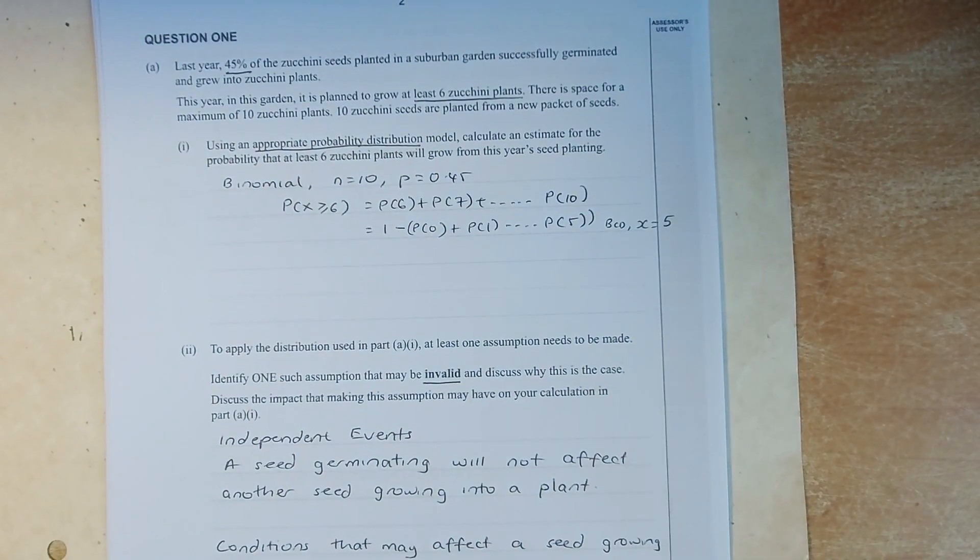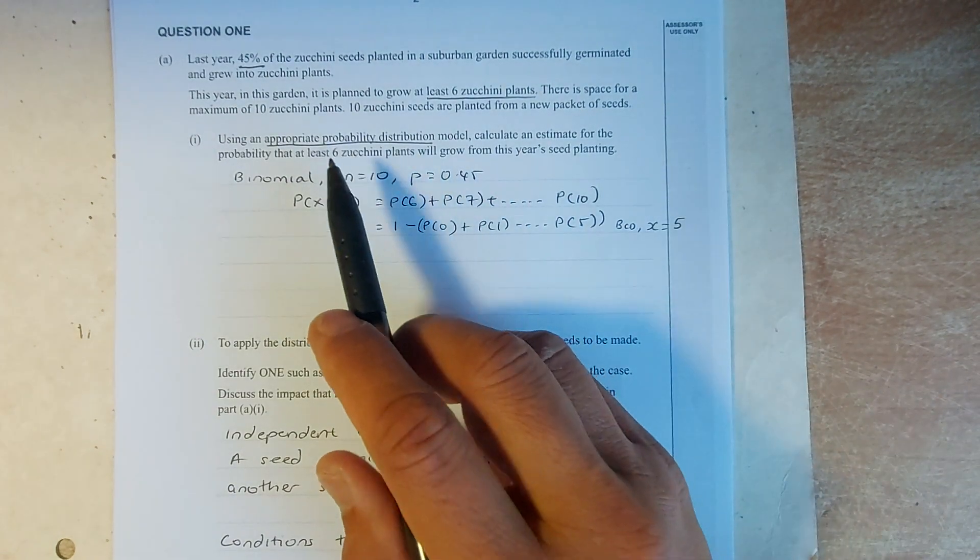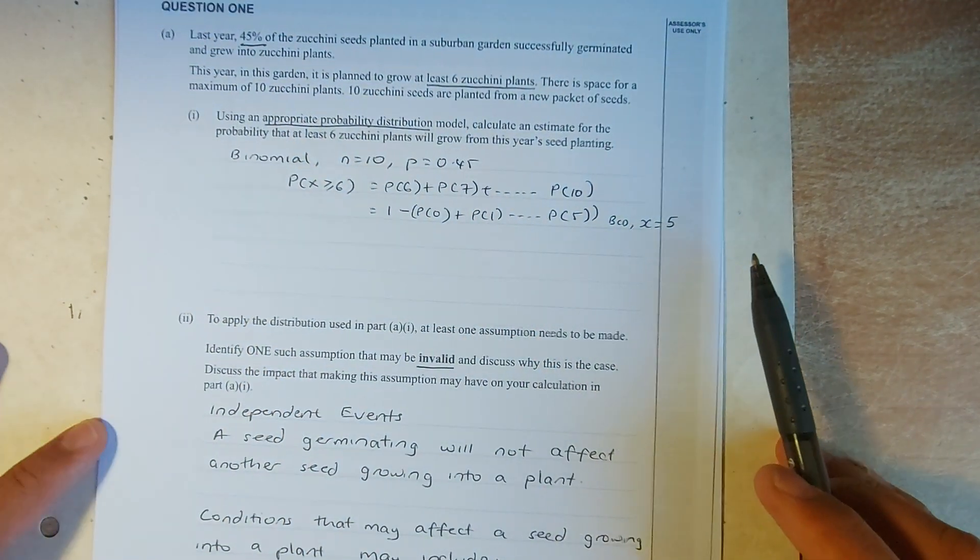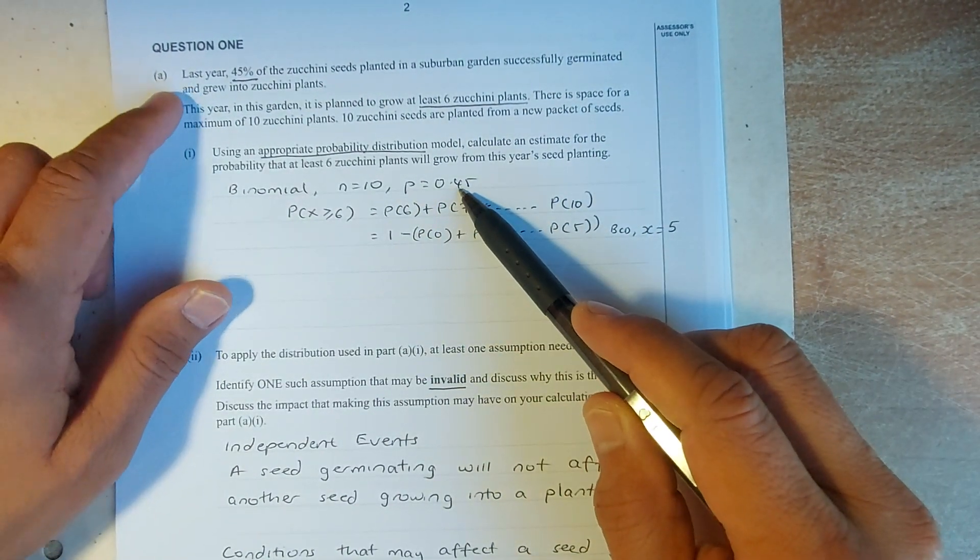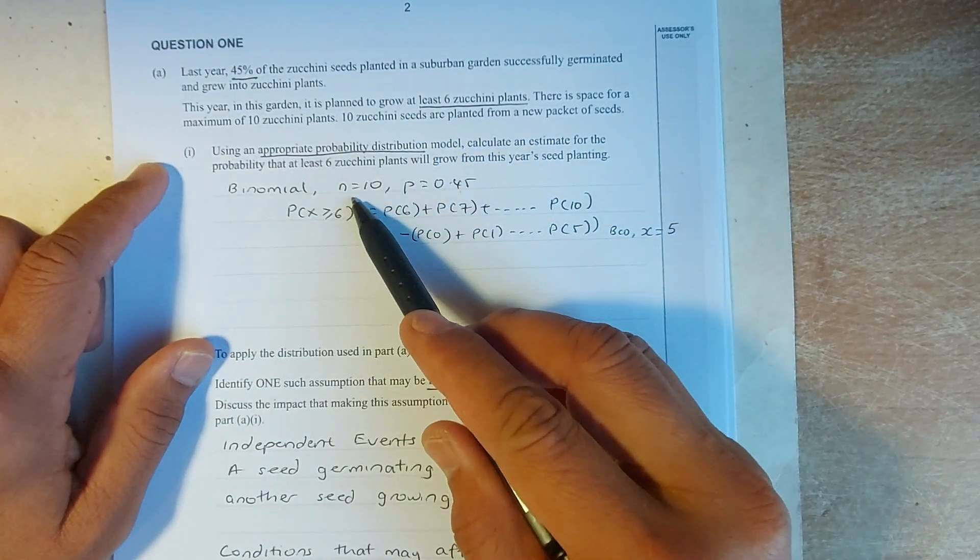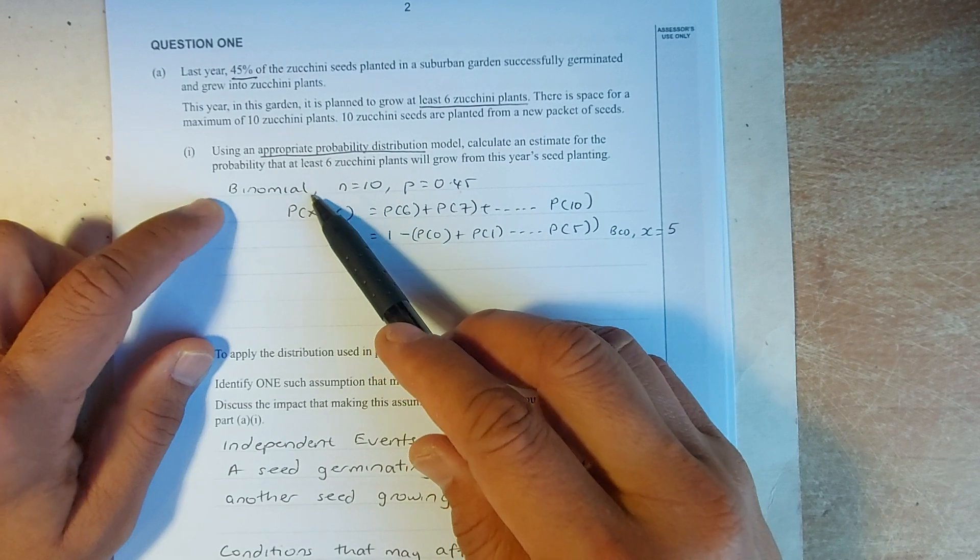Okay, the first question asks you need to find appropriate distribution when you have the probability is 0.45. So, probability is 0.45 and the fixed number of trial which is 10. Number of trials is 10. That's why we have to use the binomial distribution.